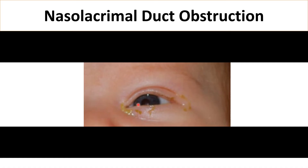This is a classic presentation of nasolacrimal duct obstruction. Usually they come to the clinic because of possibility of eye infection — this is not an eye infection. The eyelid is normal, not swollen, no redness, and the conjunctiva is white, no conjunctival injection.